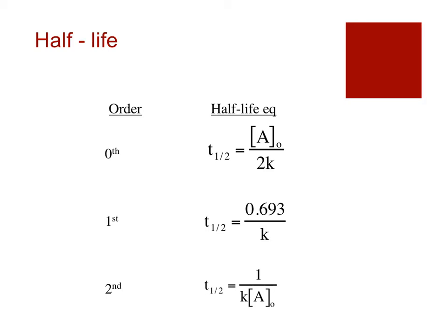For zero order, the higher the concentration, the longer the half-life time. For second order, it's in the denominator, so the higher the concentration, the lower the time. But for first order, the half-life does not depend on concentration. How you've defined half-life in nuclear chemistry is actually first order kinetics. It does not matter how much you have—the time will be constant. The half-life for zero and second order can actually change with each successive half-life, but nuclear chemistry is always first order kinetics.